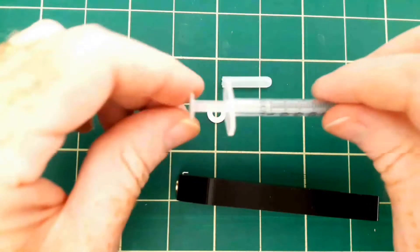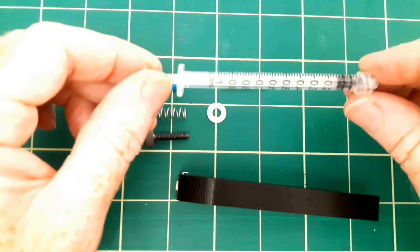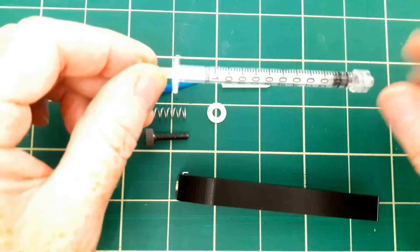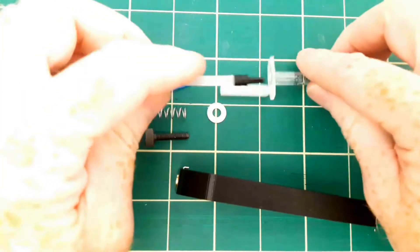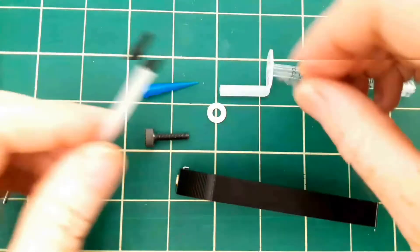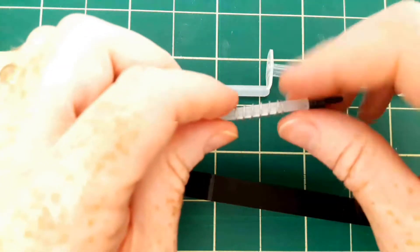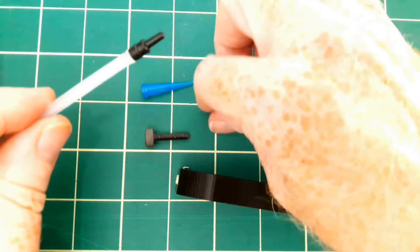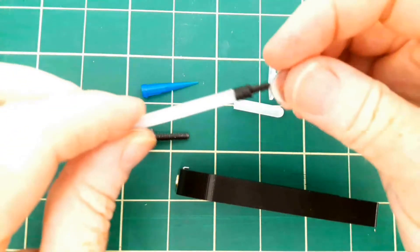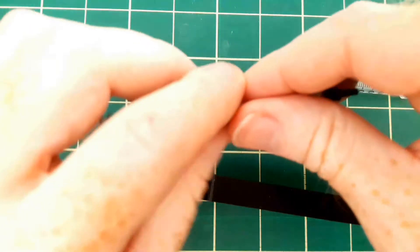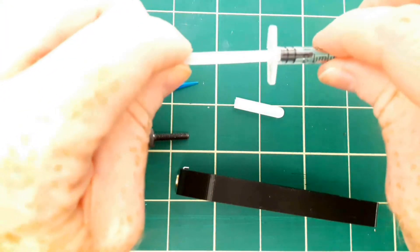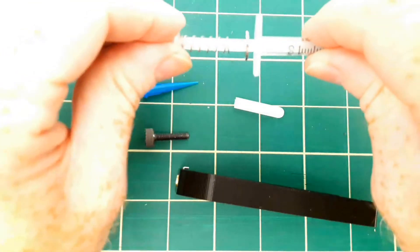Next order of business is to take this one cc syringe with a luer lock tip and take the plunger out and put this compression spring on and then this number eight washer over that and we'll put the plunger back in.